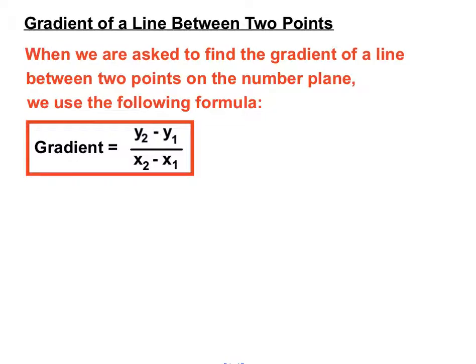Now we've seen in other videos there are other ways of finding the gradient. We check out the rise and the run, and this formula here is based on that idea. The difference between two y values is the rise, and the difference between two x values is how much the two points have run between the two.